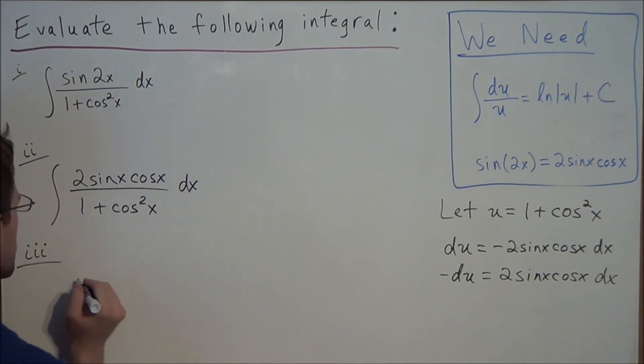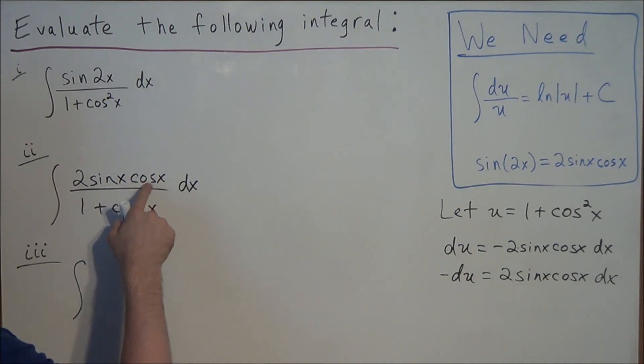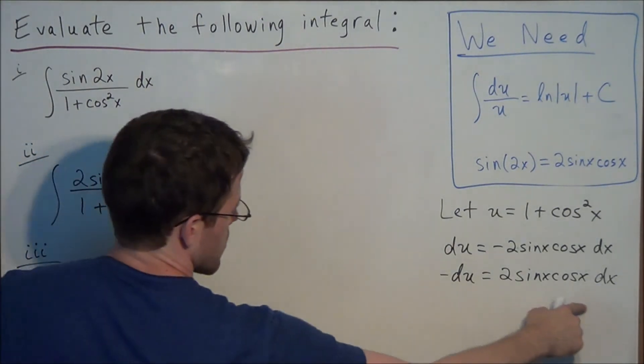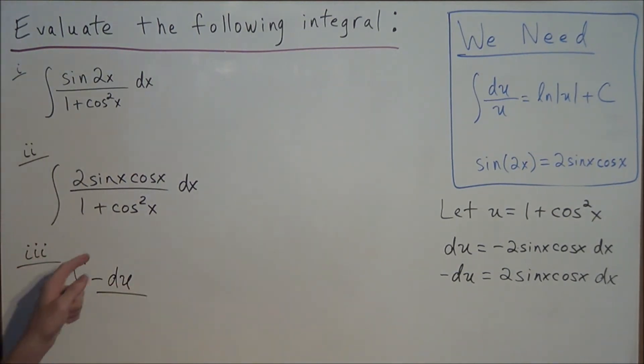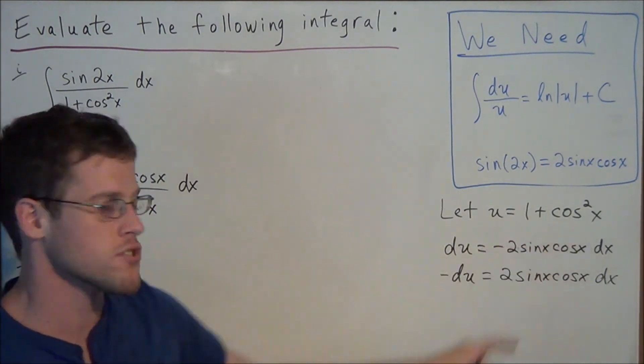For step 3, we have the integral of, and now instead of 2 sine x cosine x dx, we're going to write negative du over, and now we have 1 plus cosine squared x, that we could replace with u.